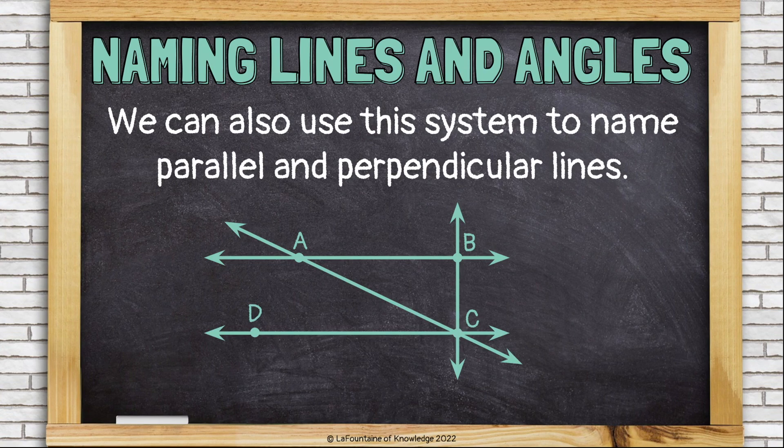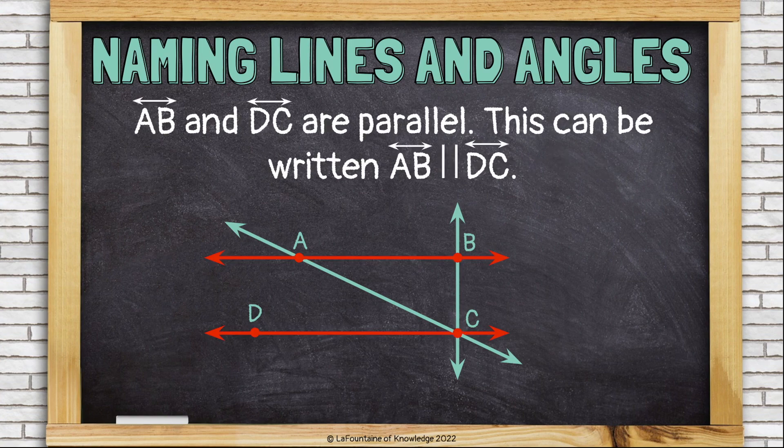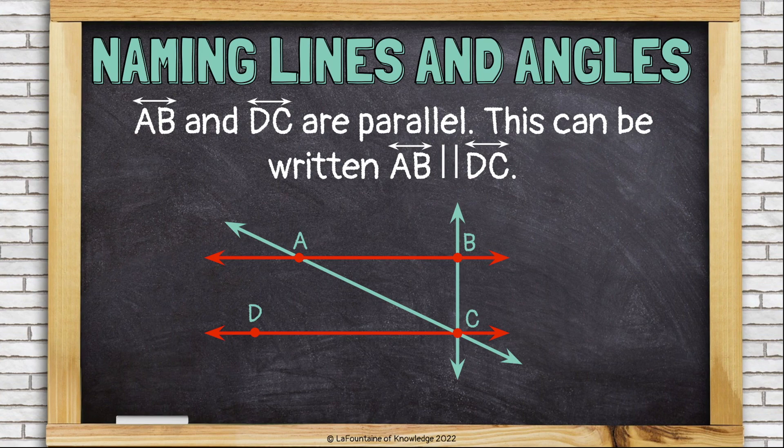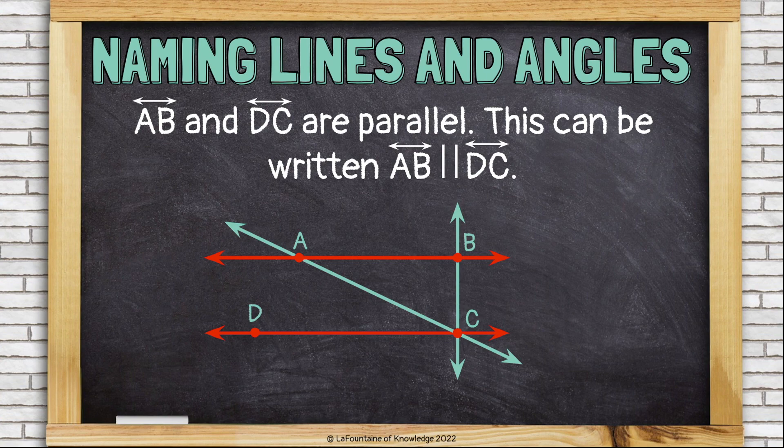We can also use this system to name parallel and perpendicular lines. Line AB and line DC are parallel. This can be written line AB and then the symbol for parallel, which just looks like two little parallel lines, line DC.